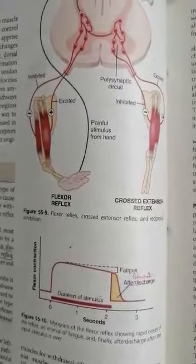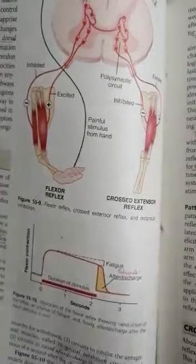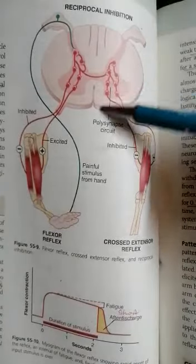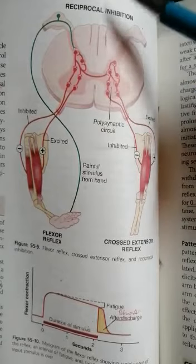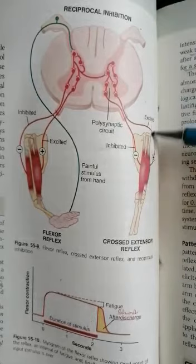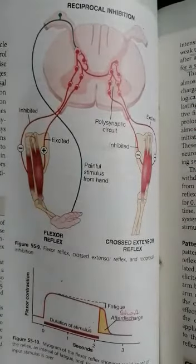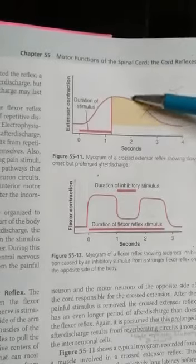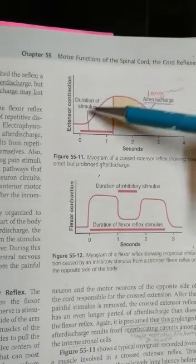In the extensor reflex, the circuits present are the polysynaptic circuit, which is also the reverberating circuit — again and again stimulation of the same impulse. The second is the same reciprocal inhibition circuit as in the flexor reflex — inhibition of the antagonistic muscle. The third circuit present in the extensor is also the after discharge circuit.